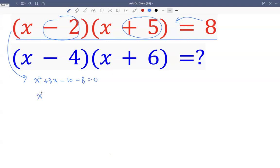So we have x squared plus three x minus 18 equals zero. Now we need to think of two factors of negative 18 that add up to positive three.